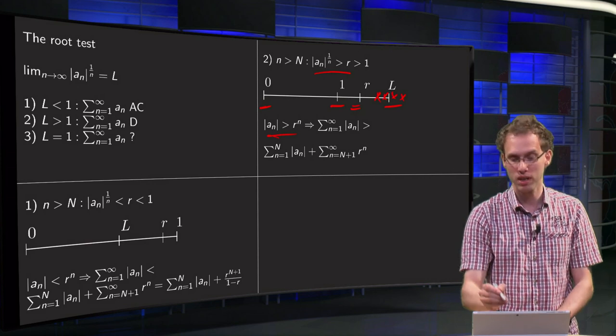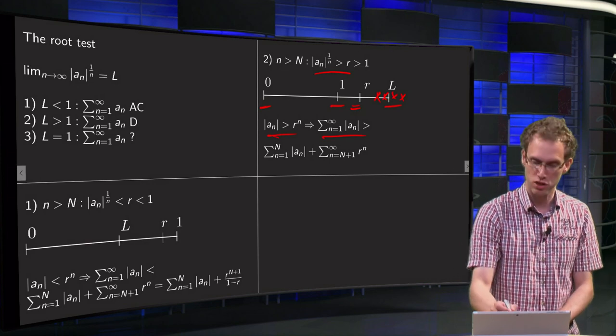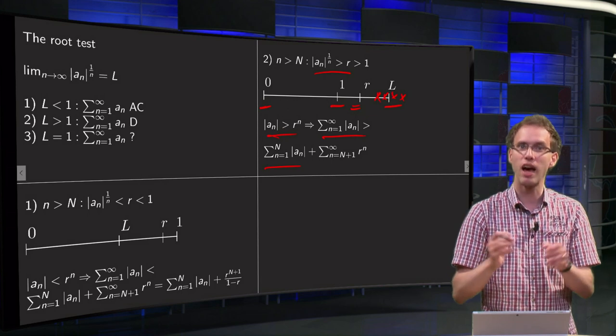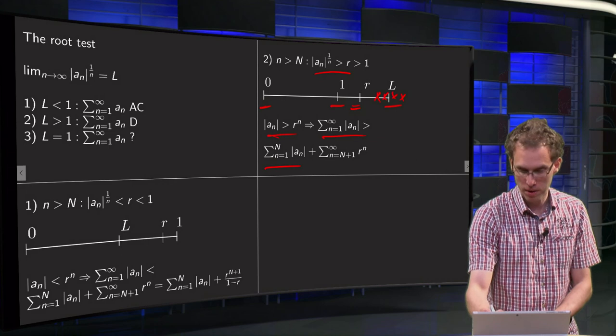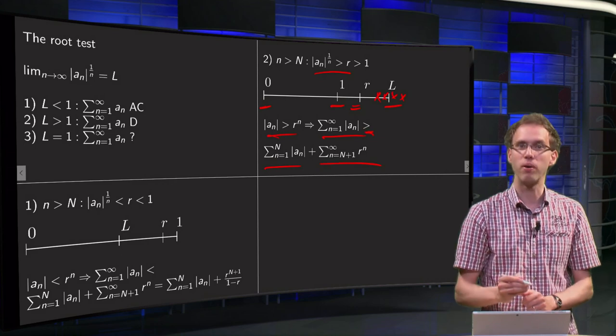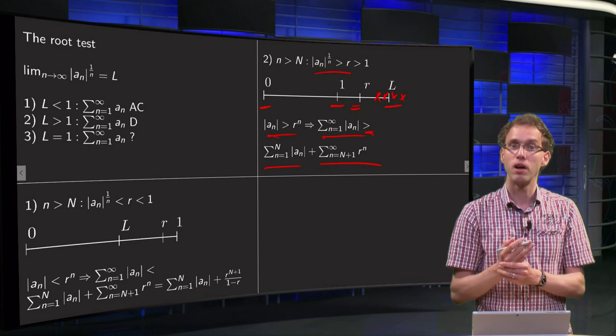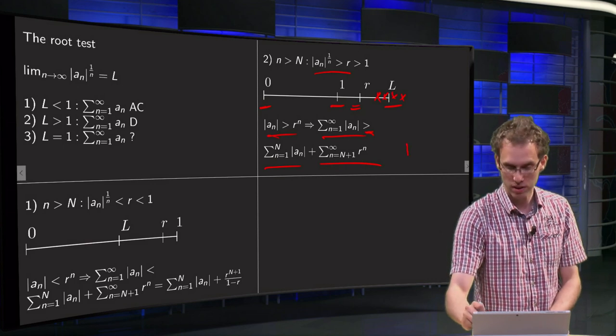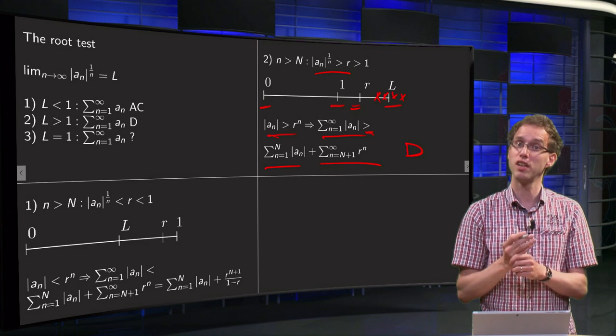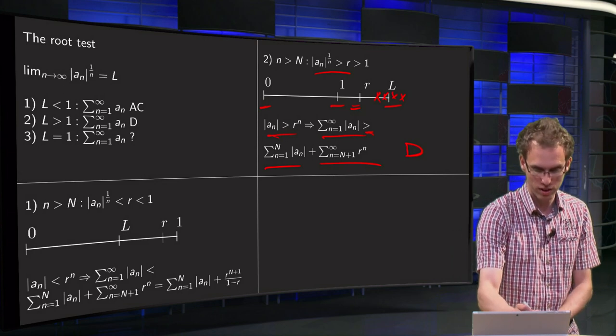And we do again the same trick. Our infinite series, this is sum of the first n terms where anything can happen, plus the tail, and in the tail we are bigger than r to the power n. Now our r is bigger than 1, which means that our geometric series, the second series is diverging, so that's why we get a divergence over here.